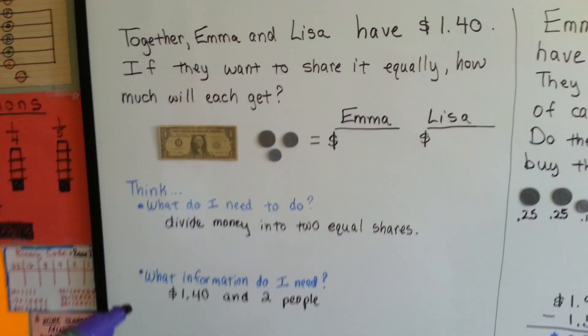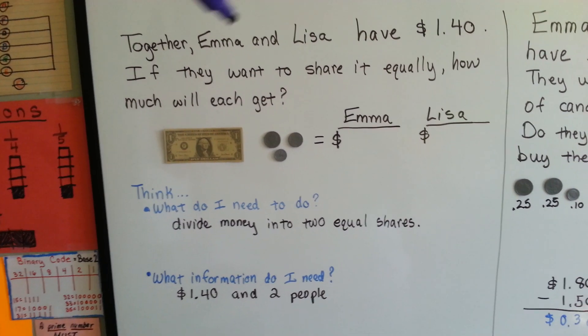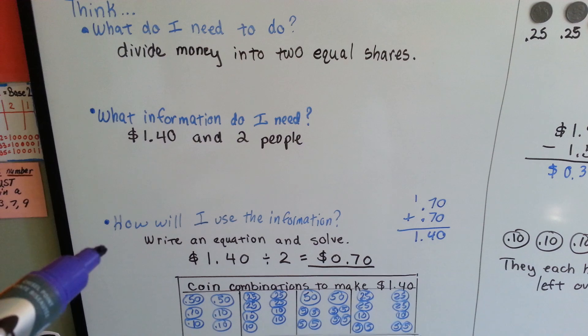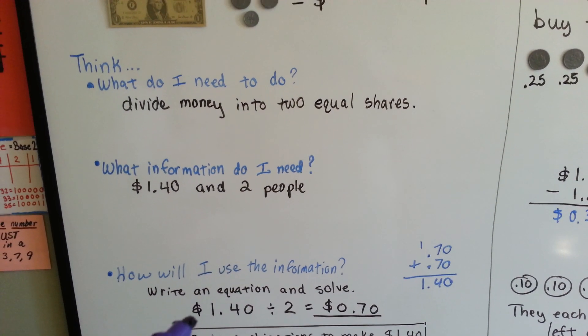What information do I need? I need to know that they have a dollar forty and there's two people that it's going to be split between. How will I use the information? I'll write an equation and solve it.